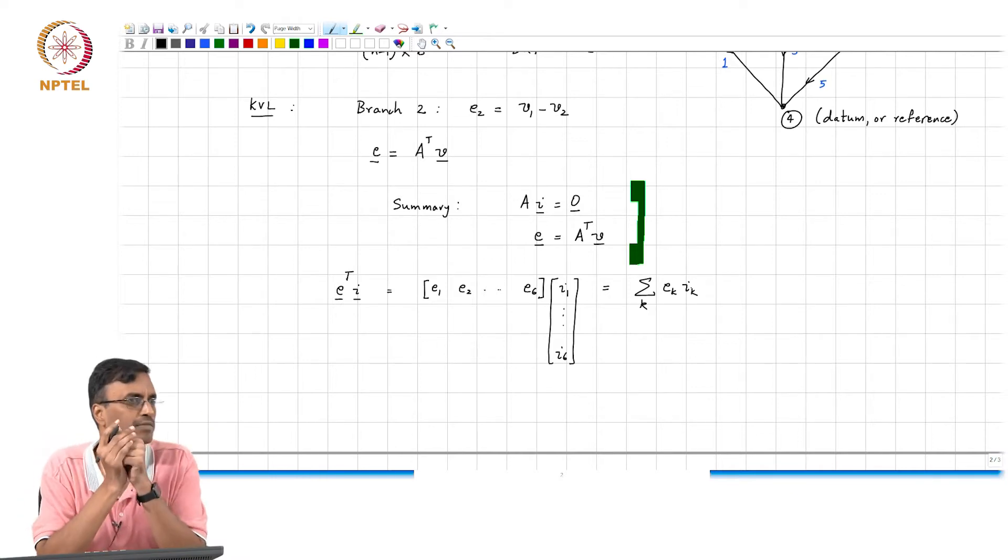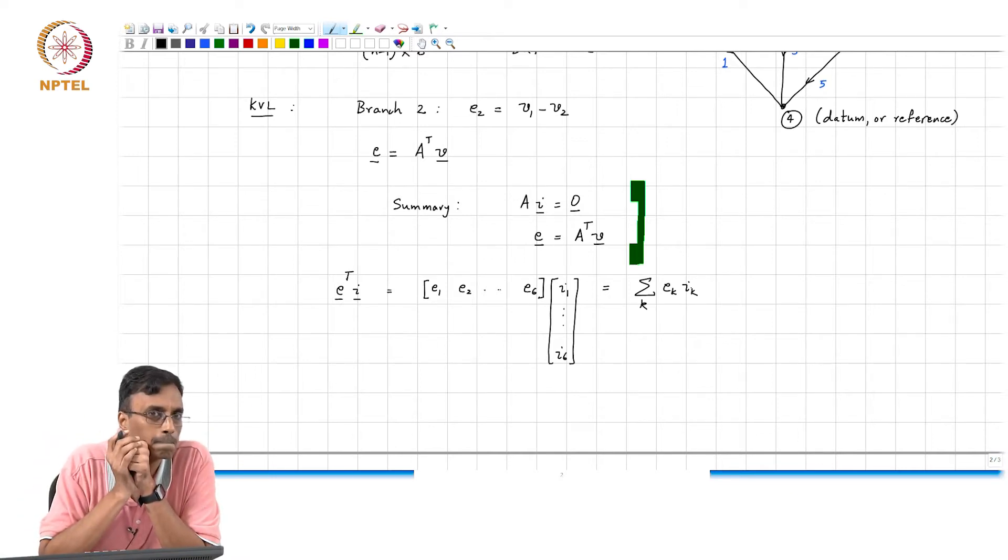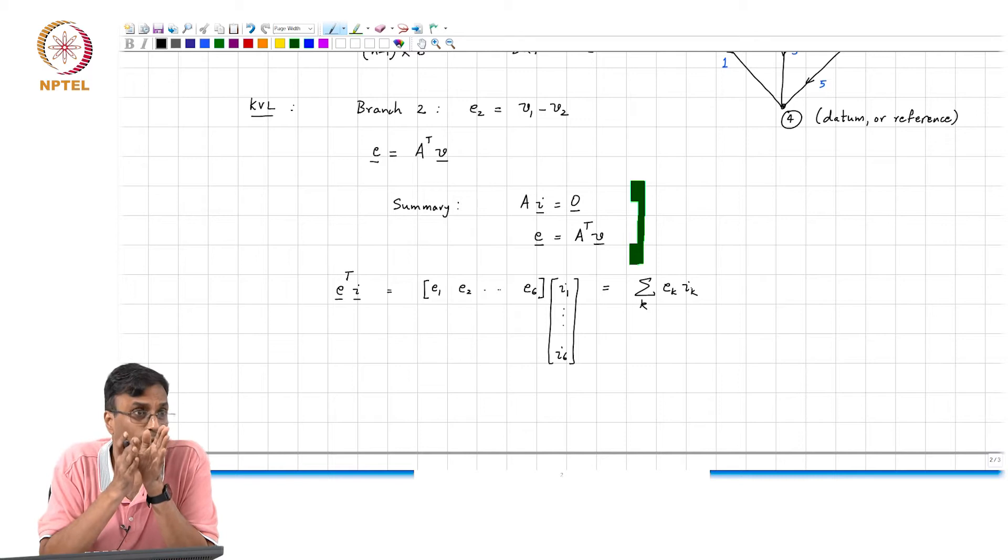What interpretation can we give to this quantity? It is the sum of all instantaneous powers being dissipated in the branches.